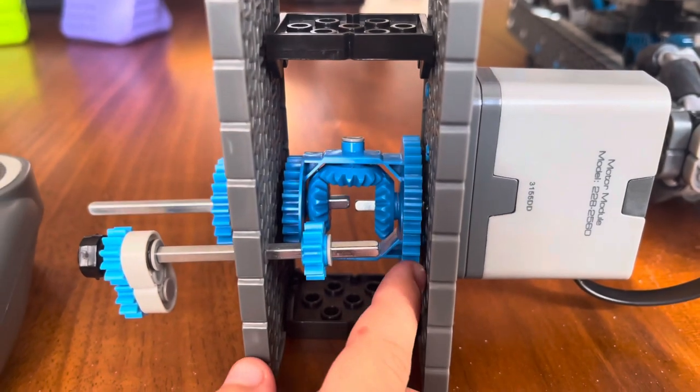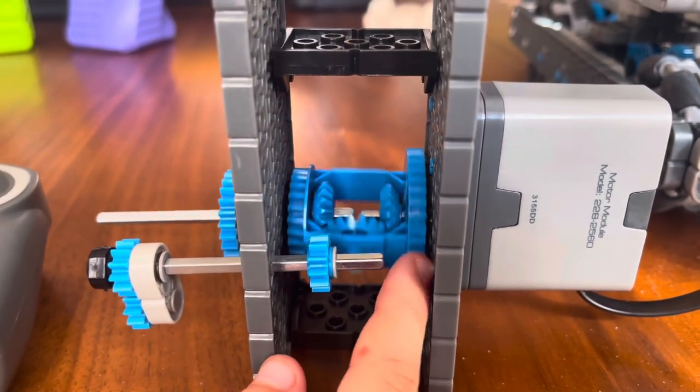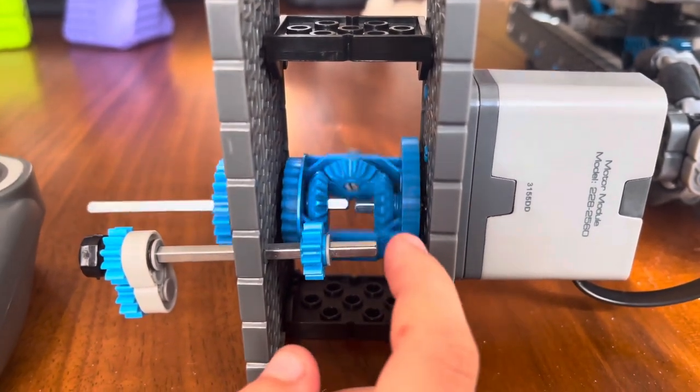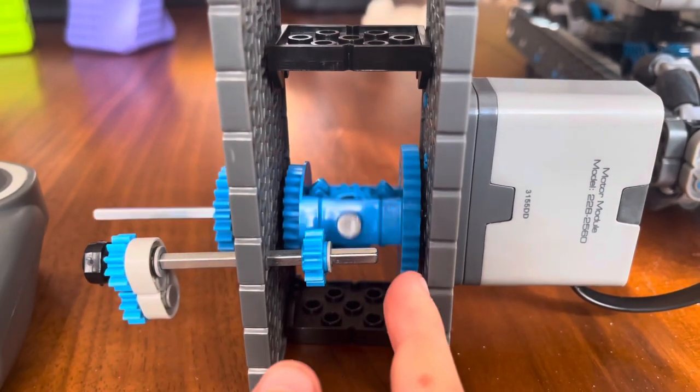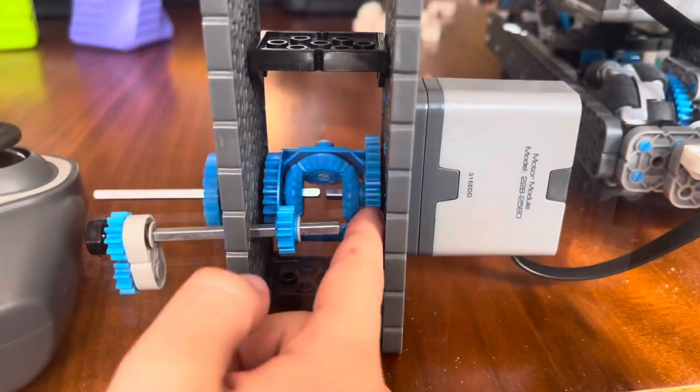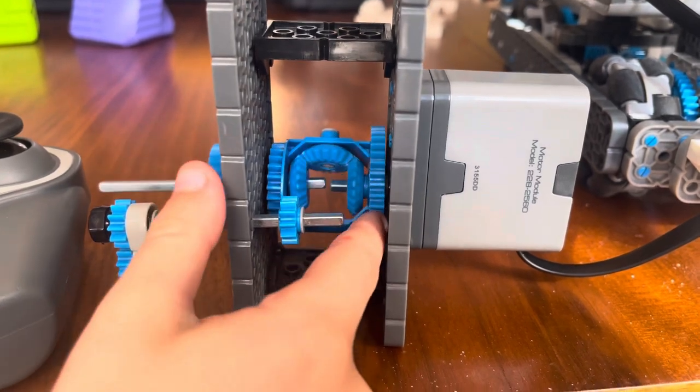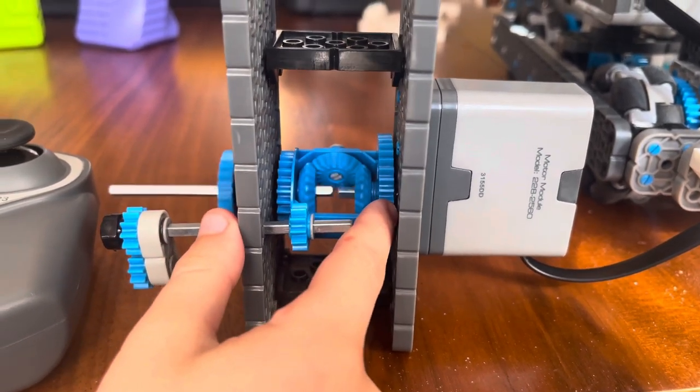Without any friction, the differential gear will spin most of the time instead of the pedal gear. But with a little bit of friction, the pedal gears would spin instead of the differential gear.